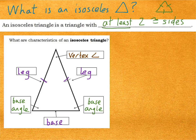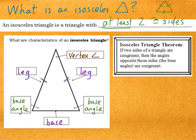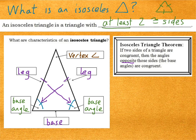Now let's look at the isosceles triangle theorem. The isosceles triangle theorem says that if two sides of a triangle are congruent, hence making it isosceles, then the angles opposite those sides — the base angles — are congruent. The angle that's opposite from this side is that base angle, and the angle that's opposite from the other congruent side is the other base angle. According to the isosceles triangle theorem, those base angles are congruent. So if the legs are congruent, we know that the two base angles are congruent. That applies for all isosceles triangles.